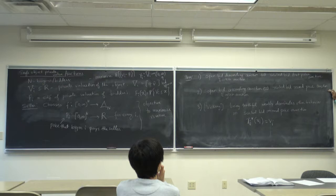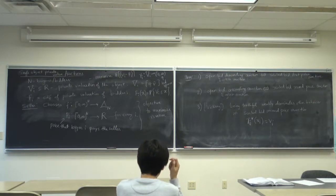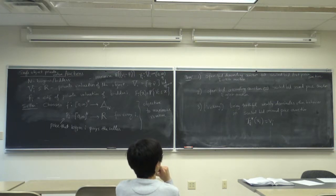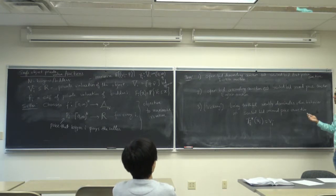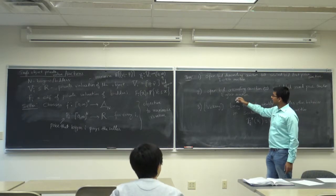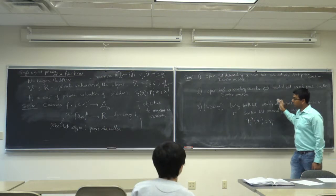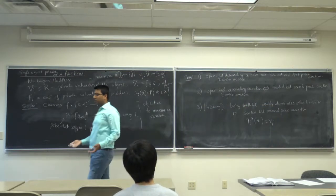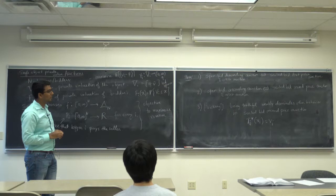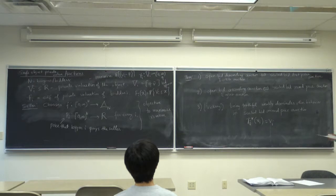For the open bid ascending auction: as the price rises, at $10 two hands are up, then at $10.50 only one hand remains. The person still bidding probably values the watch at $11 or $12. You are essentially paying almost the same price as the second highest bid — because the second highest bidder had their hand up at $10 but put it down at $10.50. The price the highest bidder pays is almost equal to the second highest bidder's value.